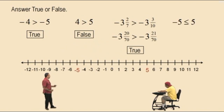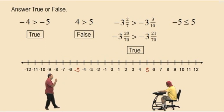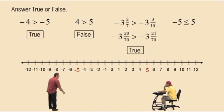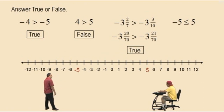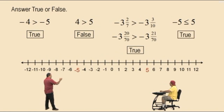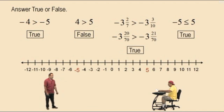Let's do another one. Negative 5 is less than or equal to 5. Now there are two cases — as long as we meet one of the conditions we're fine, meaning the less than case or the equal to case. Charlie, negative 5 less than or equal to 5 — true or false? True. That is true. Negative 5 is obviously not equal to 5, but negative 5 is less than 5, so we met that one condition, therefore we say it's true.